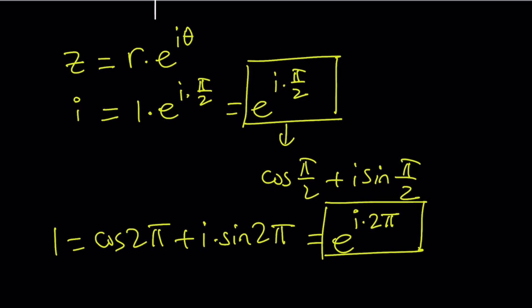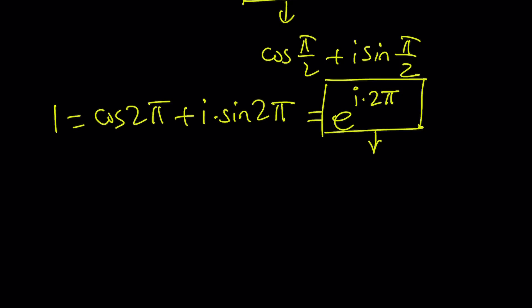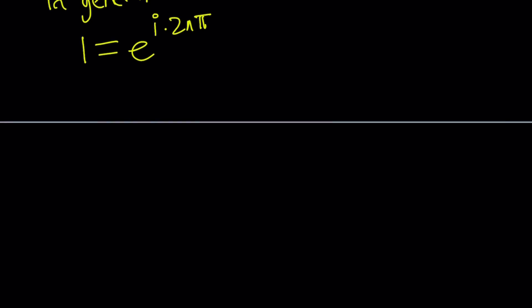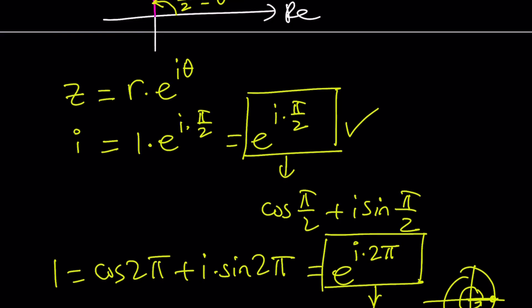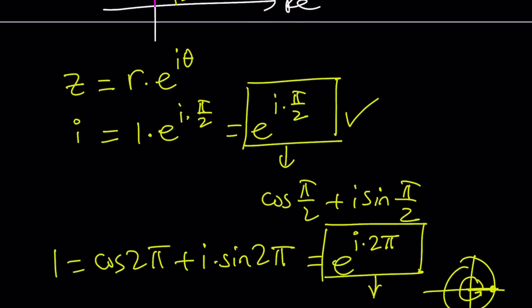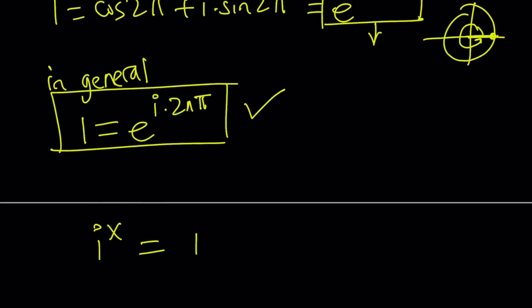But in general, in general we have something nicer because this is kind of like one of the branches, a specific branch. You can call it a principal branch if you want. But in general, 1 can be written as e to the power i times 2 n pi. In other words, you can basically replace 0 radians or 0 degrees with multiples of 2 pi because that will be the same thing after all these rotations. Now, let's go ahead and write our equation. We have something for i and remember our original equation was i to the power x equals 1. Now I'm going to go ahead and replace i with this and 1 with that, the more general form. And it doesn't matter on the left hand side if you use the principal branch because the x will take care of all the different branches.